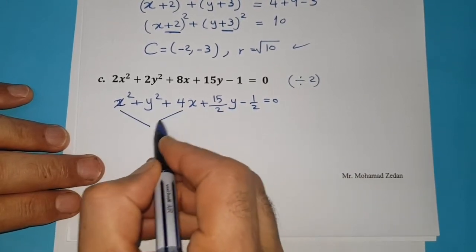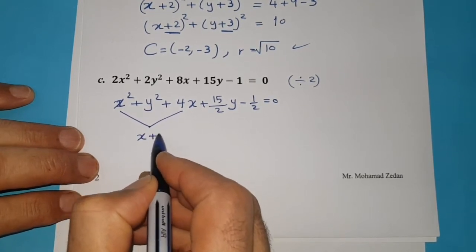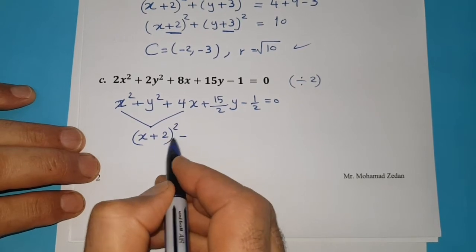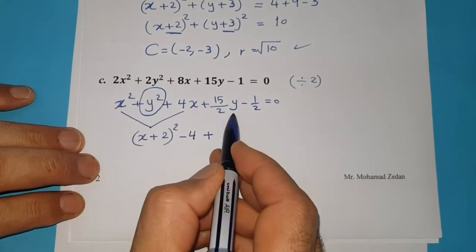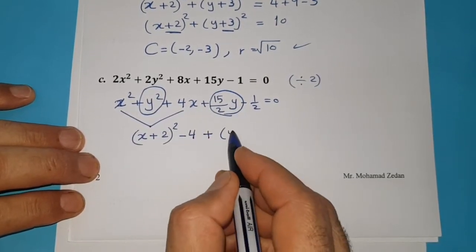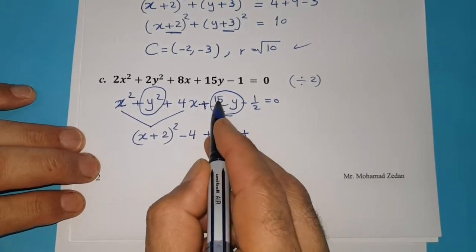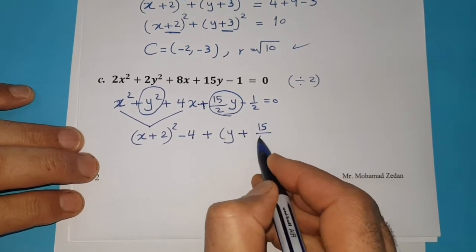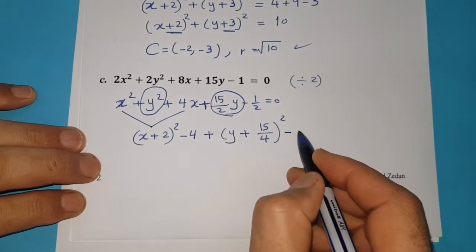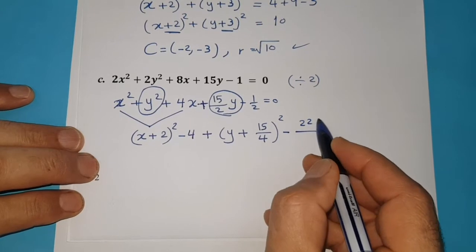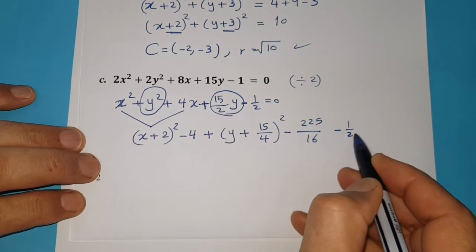Now make a complete square for the x terms: (x plus half of 4, which is 2) all squared, minus that number squared, which is 4. Also for y, working with y squared and (15/2)y: (y plus half of 15/2, which is 15/4) all squared, minus that number squared, which is 225 over 16. Don't forget to write negative one half equals 0.